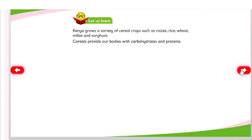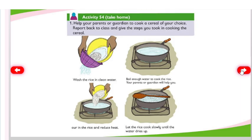Kenya grows a variety of cereal crops such as maize, rice, wheat, millet, and sorghum. Cereals provide our bodies with carbohydrates and proteins. Activity 54 — Take home: Help your parent or guardian to cook a cereal of your choice. Report back to class and give the steps you took in cooking the cereal. For rice: wash the rice in clean water, boil enough water, pour in the rice and reduce heat, let the rice cook slowly until the water dries up. Your parent or guardian will help you.